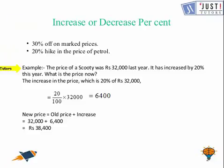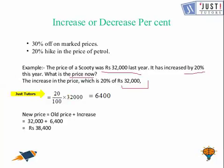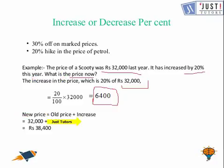Let's see this example. The price of a Scooty was Rs. 32,000 last year and it increased by 20% this year. We need to find the price now. The increase in price is 20% of Rs. 32,000, which is Rs. 6,400. So the new price will be the old price plus the increase: Rs. 32,000 + Rs. 6,400 = Rs. 38,400.